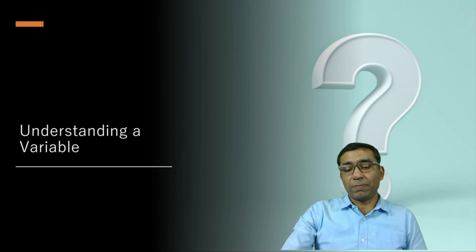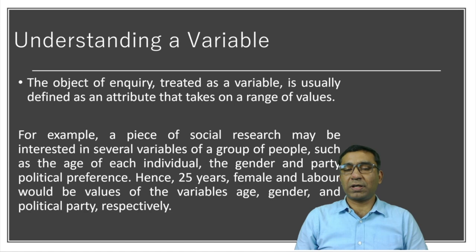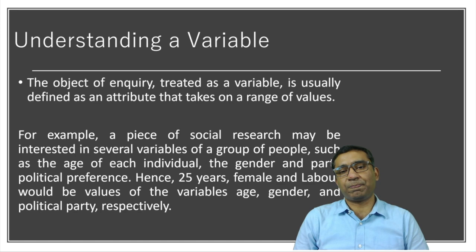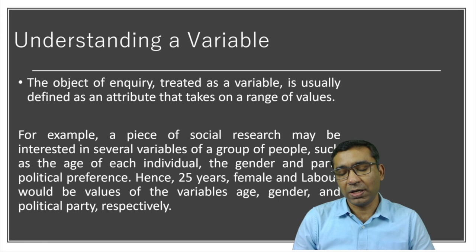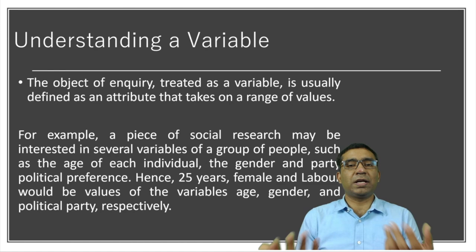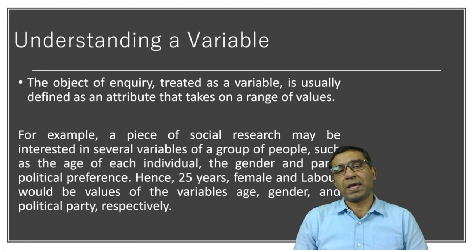Let's start with the understanding of a variable. A variable is something which changes its value with respect to given conditions, or it is the outcome or parameters to be estimated in our research. This is usually something we are interested to measure. The object of inquiry treated as a variable is usually defined as an attribute that takes on a range of values — meaning the value may vary with respect to individual characteristics.